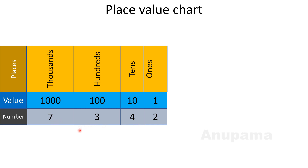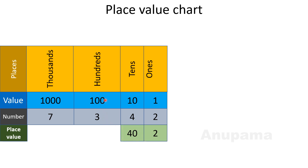We can easily find out the place value of each digit. The place value of 2: because 2 is at the ones place, we multiply 2 by 1, so the place value of 2 is 2. The place value of 4: because 4 is at the tens place, we multiply 4 by 10, and the place value is 40. The place value of 3: because 3 is at the hundreds place, we multiply 3 by 100, and the place value is 300. Similarly, the place value of 7, which is at the thousands place, is 7 multiplied by 1,000, which is 7,000.